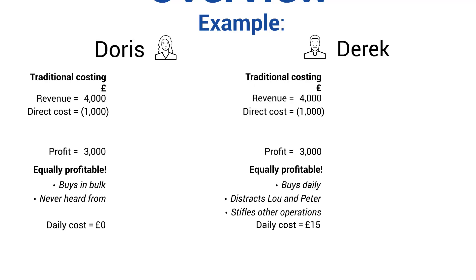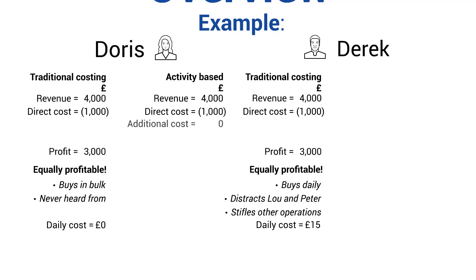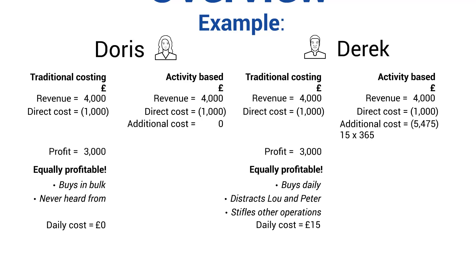So what difference does this make to their profitability when we factor that in using an activity-based method? The revenue and direct cost stays the same, but Doris has an additional cost of zero pounds because she doesn't do anything other than buy the products. Derek, however, costs the business £15 a day. He comes in every day and the shop is open 365 days a year, which means he costs the business an extra £5,475 a year. So whilst Doris's profitability is still £3,000, Derek actually causes a loss of £2,475 a year.